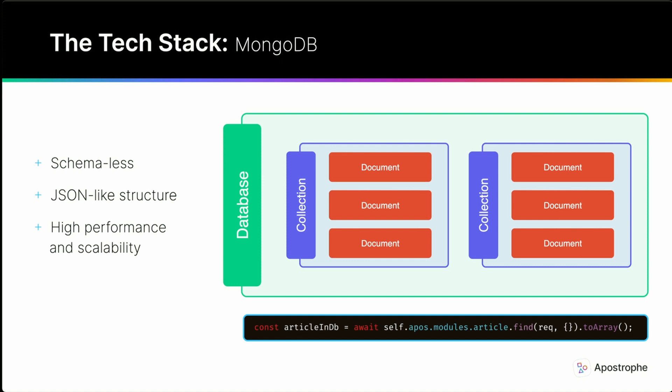This makes it a very popular choice for many applications. The Apostrophe Content Query API is designed to facilitate common and advanced requests to the MongoDB database without requiring developers to know advanced MongoDB syntax.